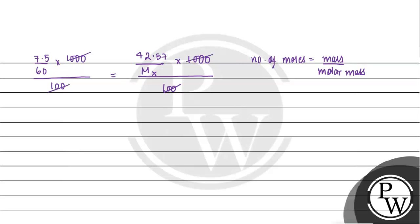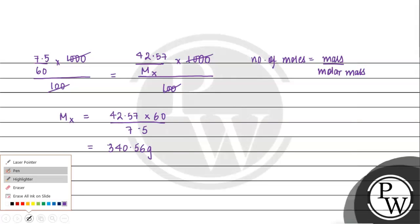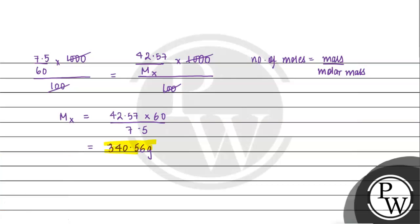The 1000 and 100 cancel on both sides. So molecular mass of X equals 42.57 into 60 divided by 7.5, which equals 340.4 grams per mole. This is the final answer. I hope you understood it well — best of luck.